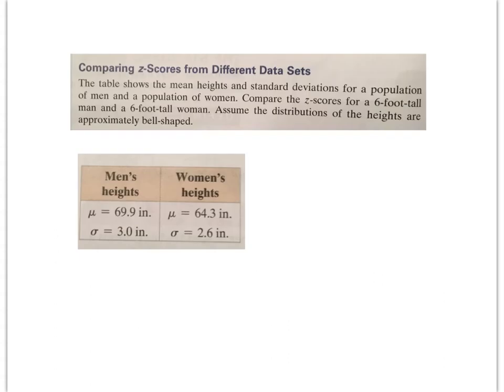Comparing z-scores from different data sets: The table shows the mean heights and standard deviation for a population of men and women. Compare the z-scores for a 6-foot tall man and a 6-foot tall woman. Assume the distribution of heights are approximately bell-shaped. Remember, the average z-score would be 0, meaning no deviation from the mean.